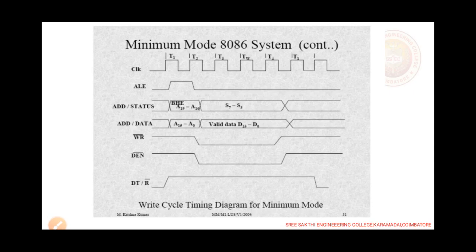During T1, A16 to A0 are selected; afterwards the data is demultiplexed from the multiplexed address and data line. WR bar equals 0 is selected from T2 to T4 pulses. DEN bar equals 0 is selected from T2 to T4 pulses.